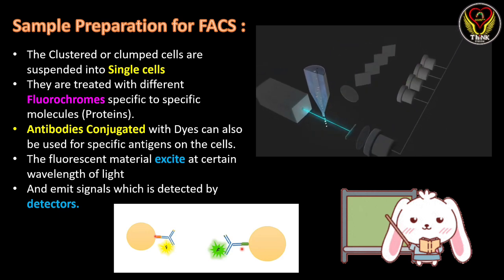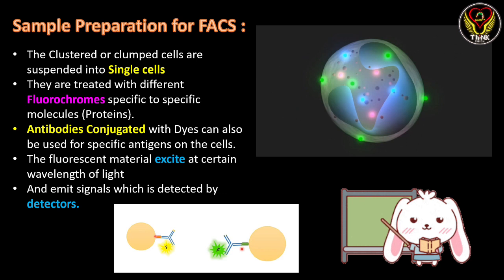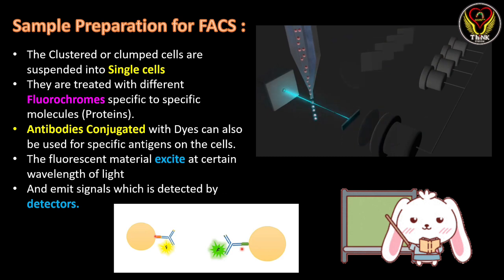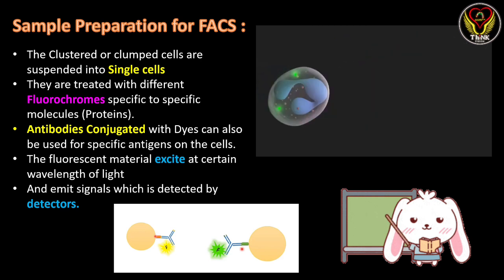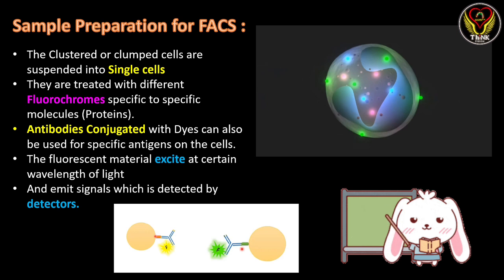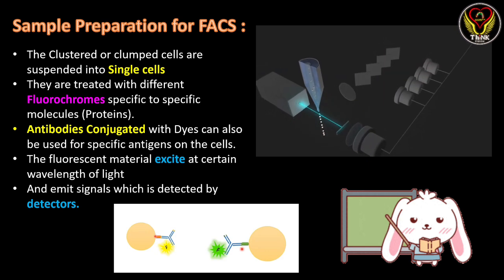For example, if we have two types of cells A and B and want to separate them, we select a fluorochrome that binds only to A and not B, and a different fluorochrome that binds only to B and not A. When we add this mixture to the FACS, cells A and B emit different fluorescence, which is recorded by the detector, and the cells are then separated.